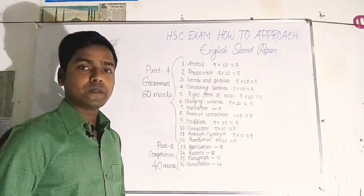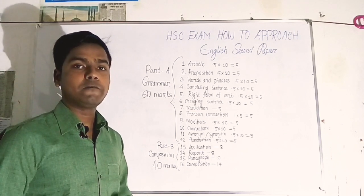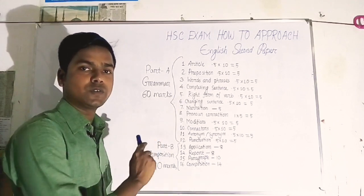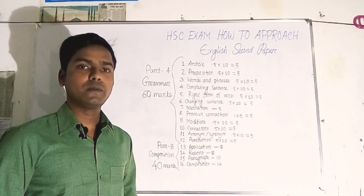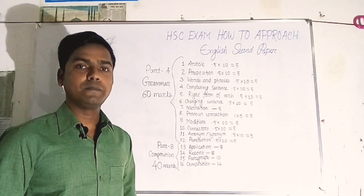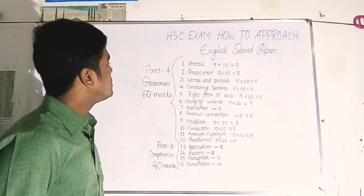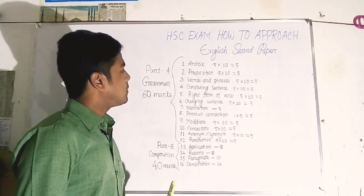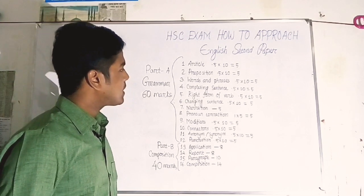English Second Paper is 100 marks. There are two parts: the first part is Grammar, worth 60 marks, and the second part is Composition, worth 40 marks. So Grammar is more important. Let's look at each item carefully.